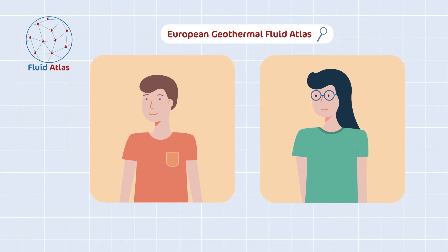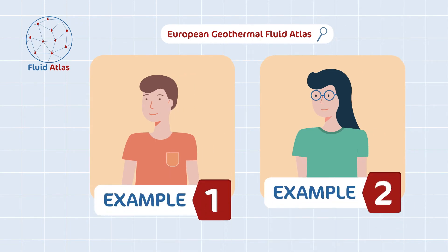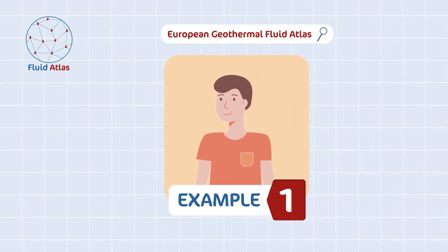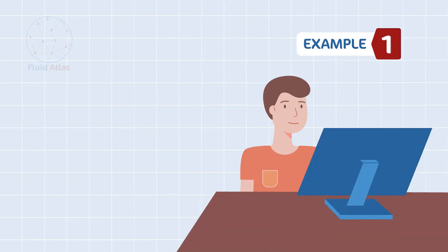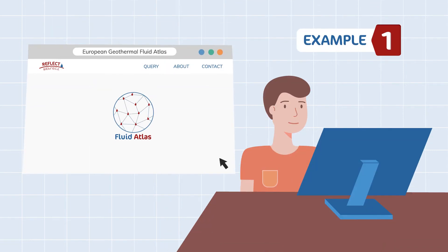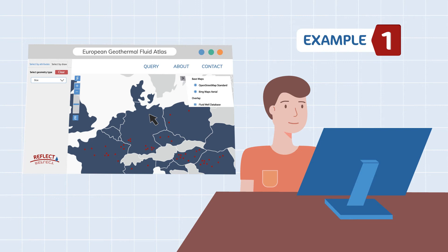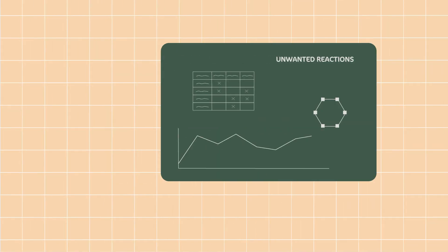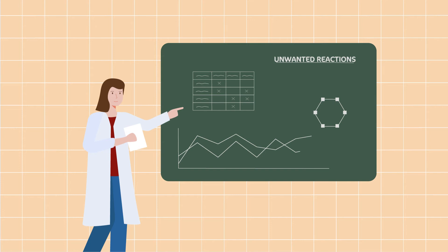Let's see two examples of use for the Reflect European Fluid Atlas. A local energy provider is considering using geothermal energy, but there is limited experience with geothermal in the area. In this case, the Fluid Atlas could be used to search for geothermal projects in the region and for the fluid properties encountered in those projects. Based on this information, a geochemist could estimate the risk of unwanted reactions, such as scaling or corrosion.